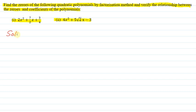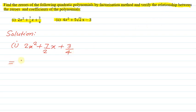We will write the first quadratic polynomial: 2x² + 7/2 x + 3/4. We can write this using the factorization method. Here we can write 2x² + 6/2 x + x/2 + 3/4.